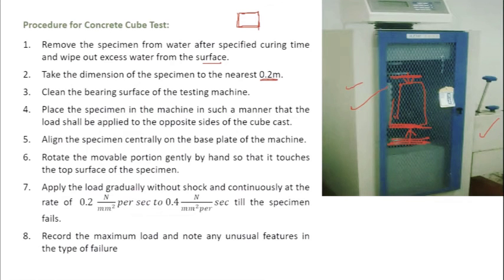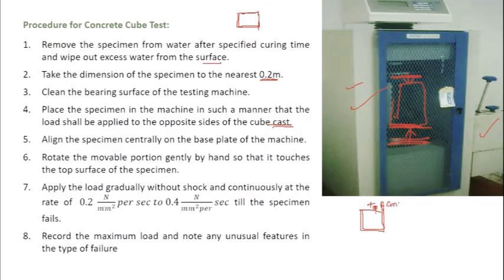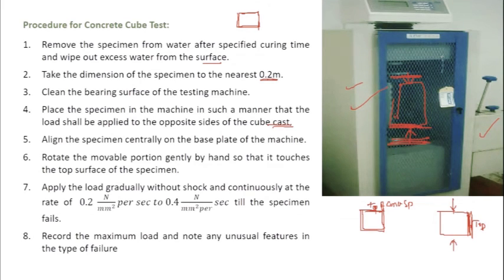Clean the bearing surfaces of the testing machine. Place the specimen in the machine so that the load is applied to the opposite sides of the cube as cast — rotate the specimen 90 degrees so the top side faces left or right. Align the specimen centrally on the base plate so that a uniform load is applied, then rotate the moving portion gently by hand until it touches the top surface of the specimen.